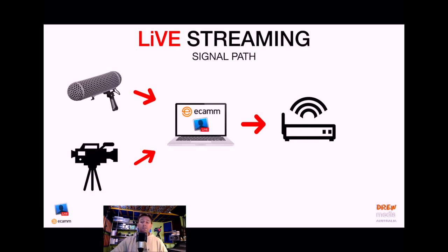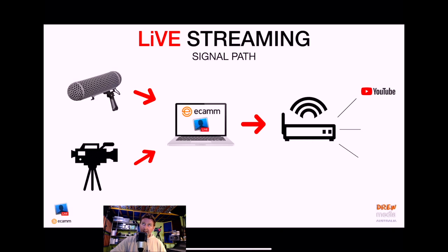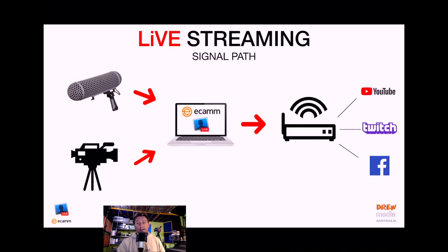Then Ecamm will send that to the internet via a modem, and those get sent to the CDNs — or what's commonly known as Content Distribution Networks. That's your YouTube, your Twitch, and of course your Facebook. When we look at all four of these elements like this, it simply allows us to start building a clear concept and a signal path of that workflow. You have to know what your inputs and outputs are doing.